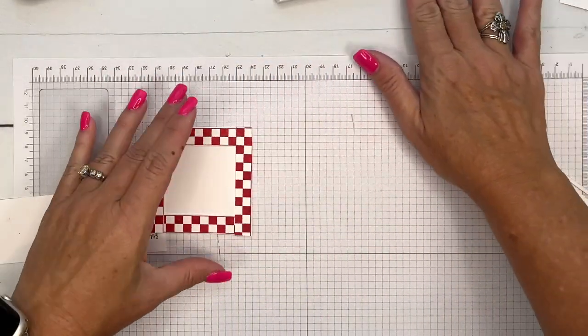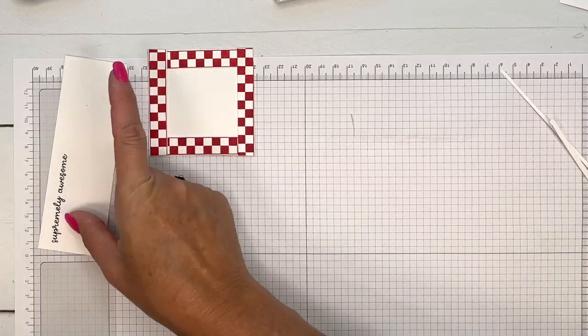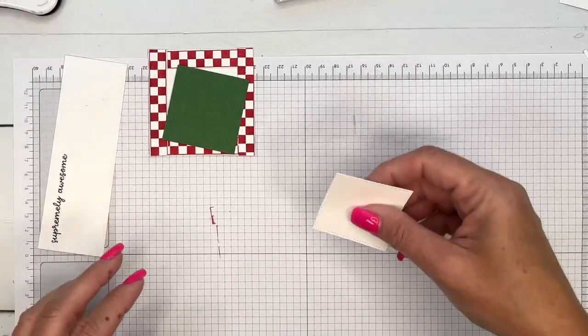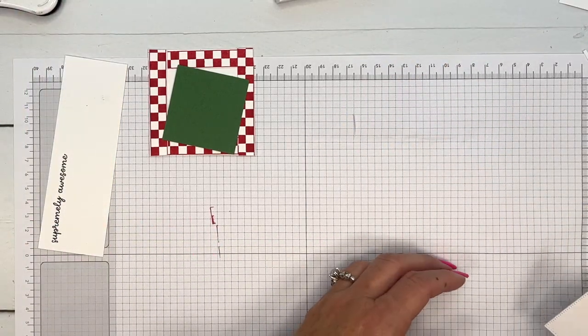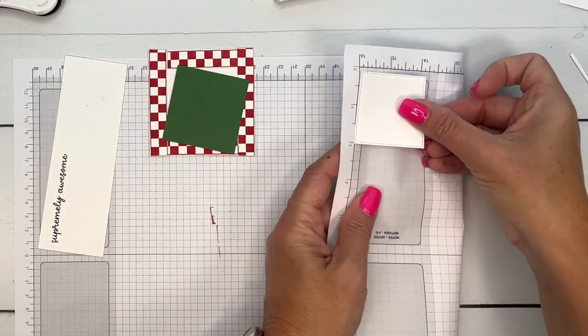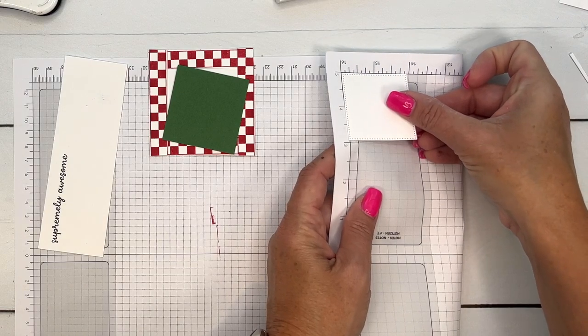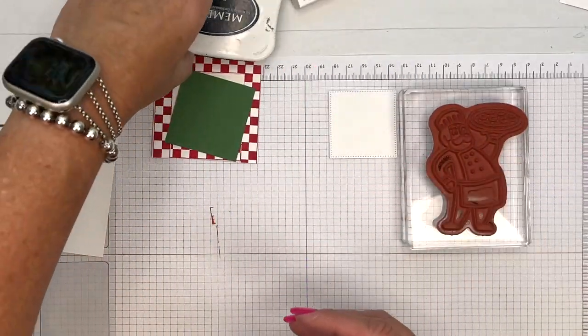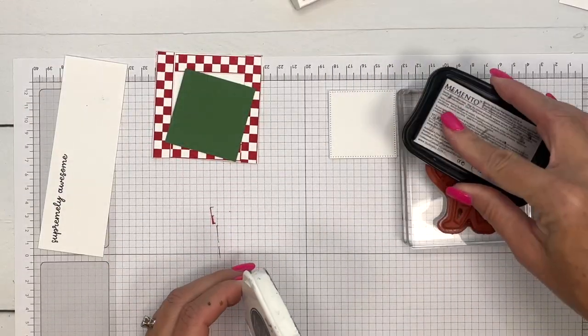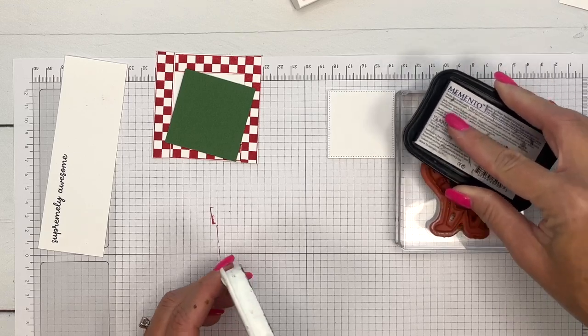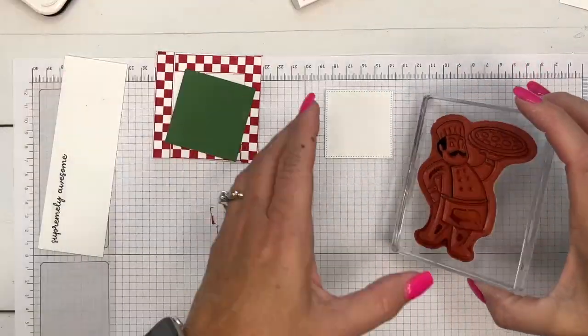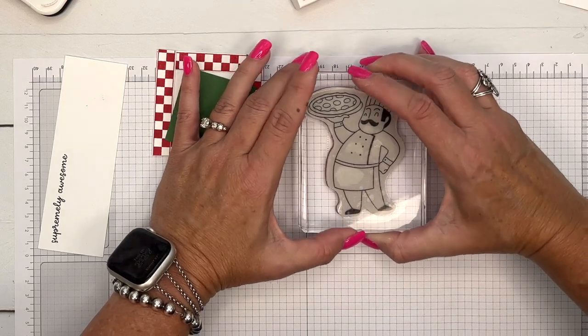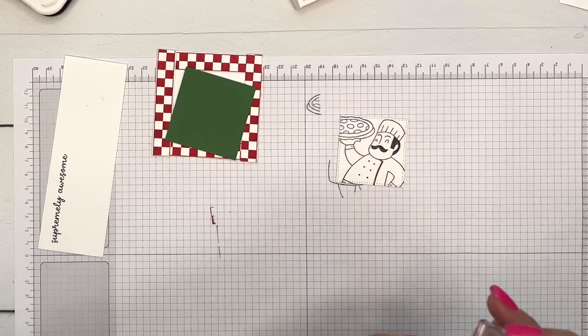All right, so there we have it. I have cut out a stylus shape square. Let's see how big it is. It is right at about one and seven eighths by one and seven eighths. I'm going to take my pizza chef and we're just going to stamp the upper part of him. We're only going to get a little snippet of him. I want to make sure I get his face and some of the pizza on there. There we go, perfect.